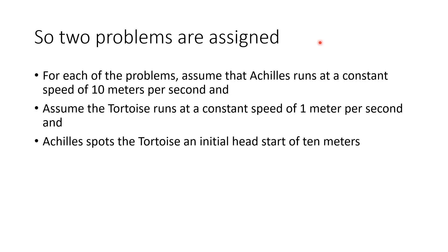Two problems are assigned based on this. For each of the problems, you are to assume that Achilles runs at a constant speed of 10 meters per second — not quite Olympic speed, but very good, and you should realize they didn't have good shoes back in the day. The tortoise runs at a constant speed of one meter per second — actually pretty good for a tortoise. Also assume that Achilles spots the tortoise an initial head start of 10 meters, as the story said.